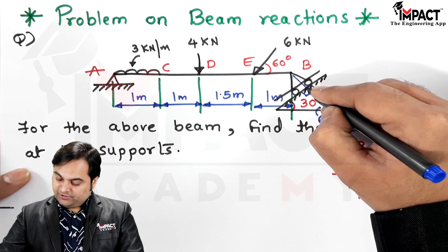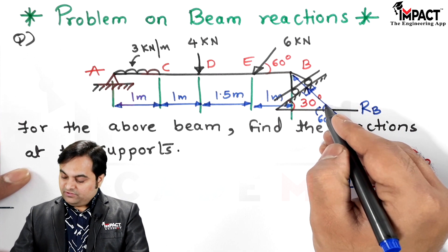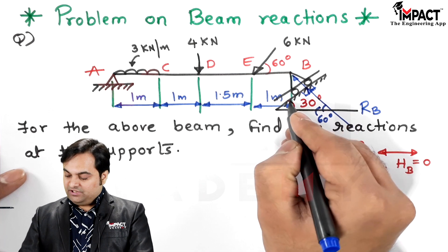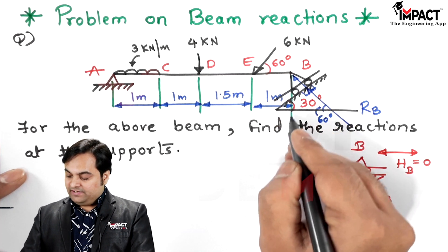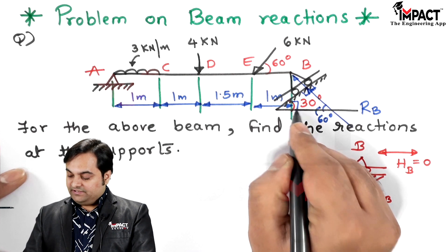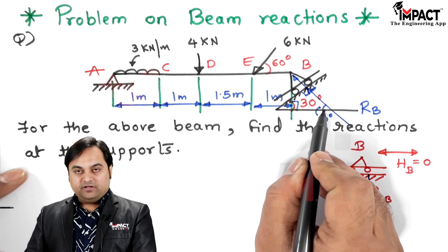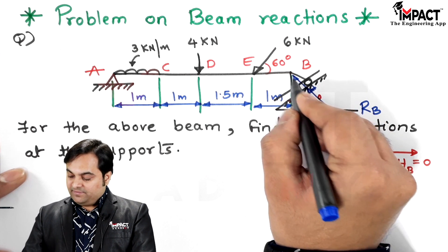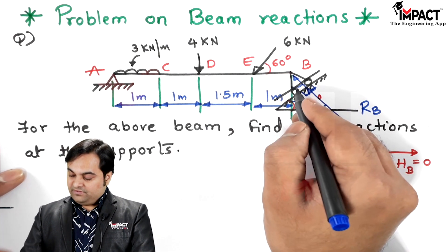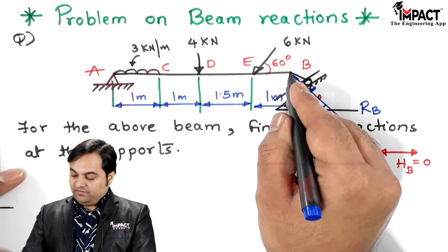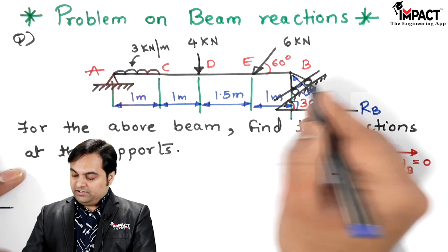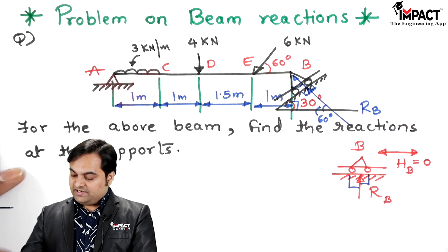The reaction makes 60 degrees with the horizontal. When a vertical line is drawn, since the vertical is 90 degrees and the reaction makes 60 degrees with horizontal, the angle made by the reaction with the vertical is 30 degrees. Since the angle is measured with respect to the vertical, we will get two components of this reaction.